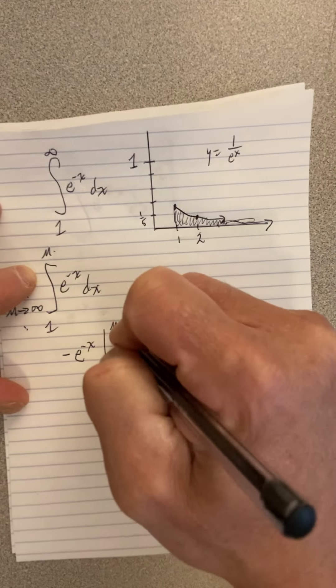So let's see, this double negative becomes a plus, and it's just 1 over e. So we have a number there. So we're going to have the limit of that number, 1 over e, as m goes to infinity. Well, that's just a number. And then we're going to have this limit as m goes to infinity of negative 1 over e to the m.